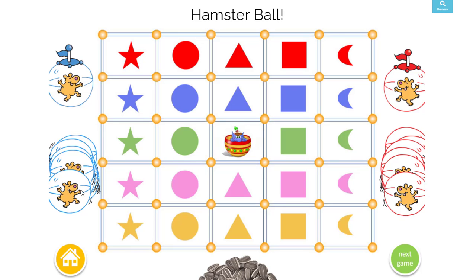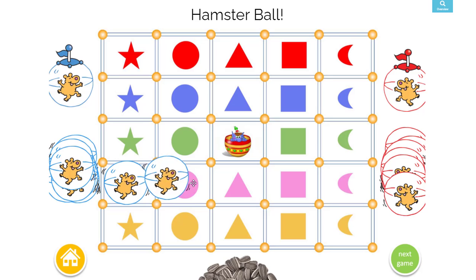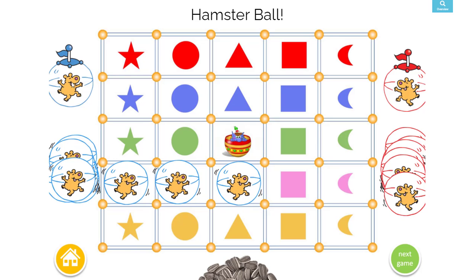This reinforcer game is called Hamster Ball and there are two teams, blue team and red team. The hamsters are trying to make a line of four, and when you finally get the fourth one in place, you can place this one with a flag and win the game.